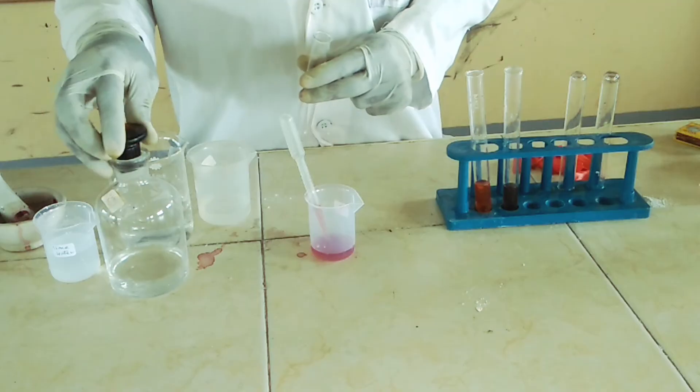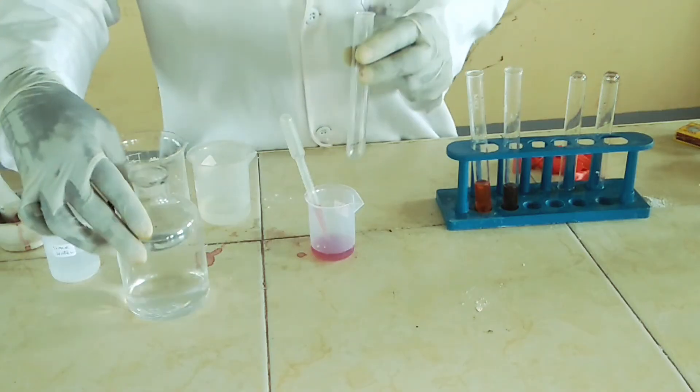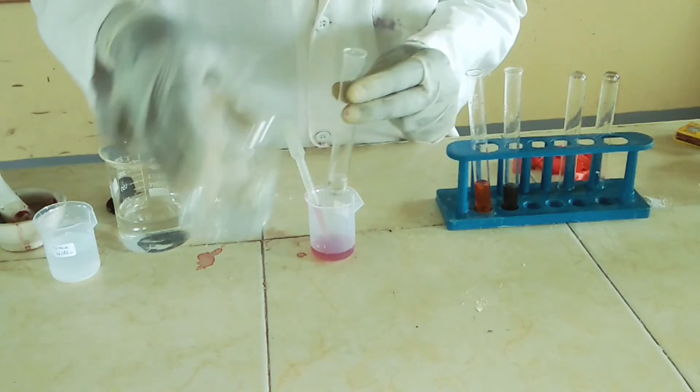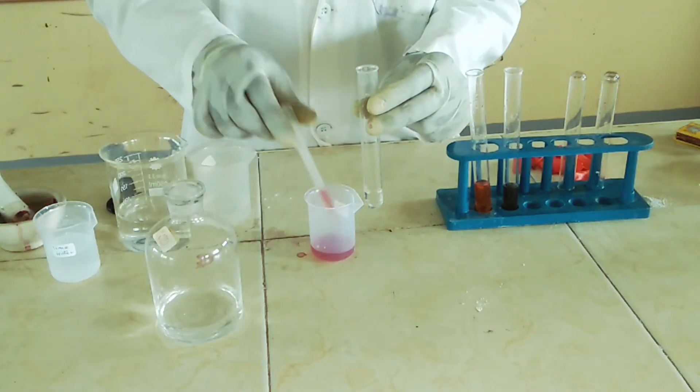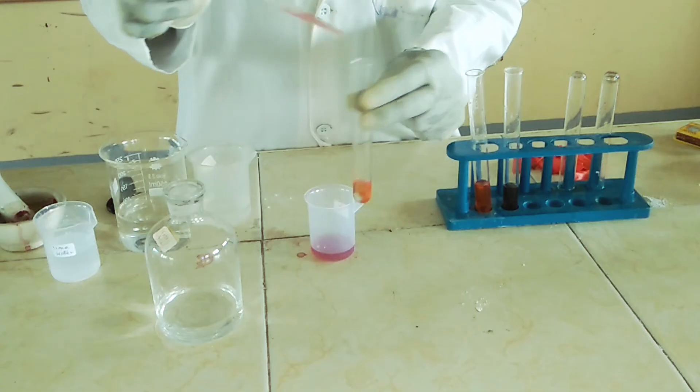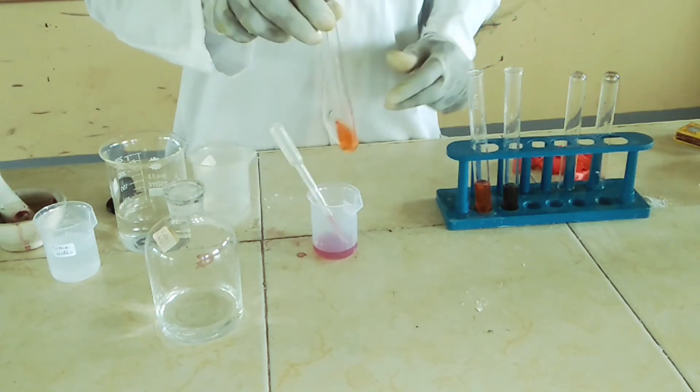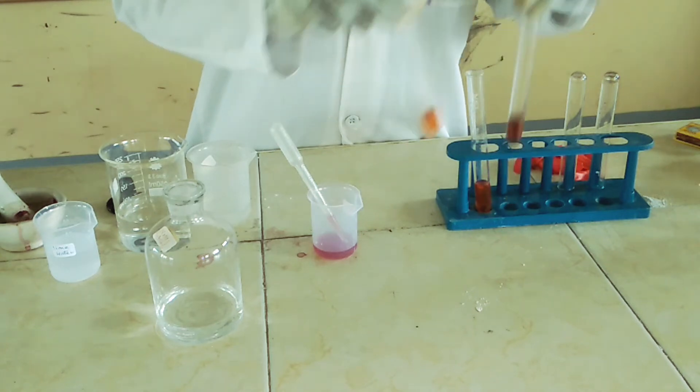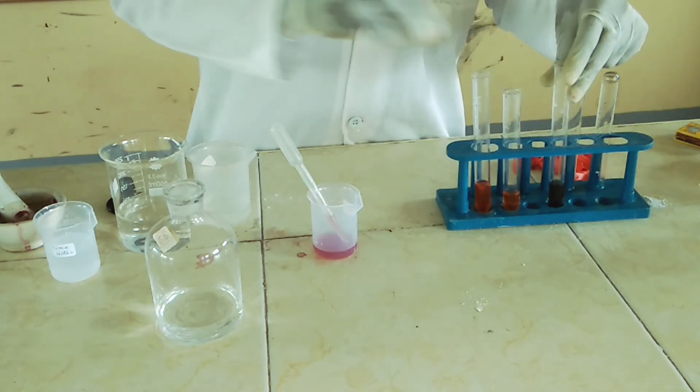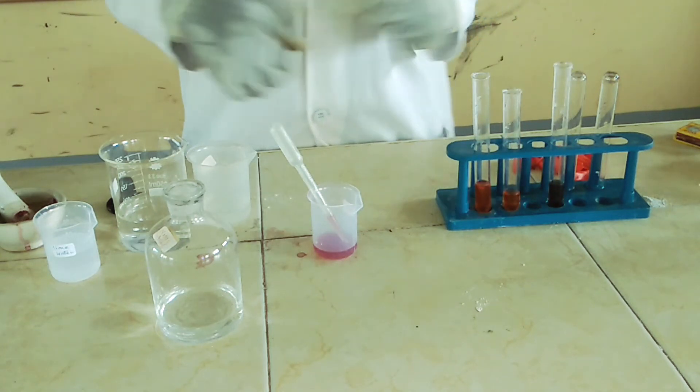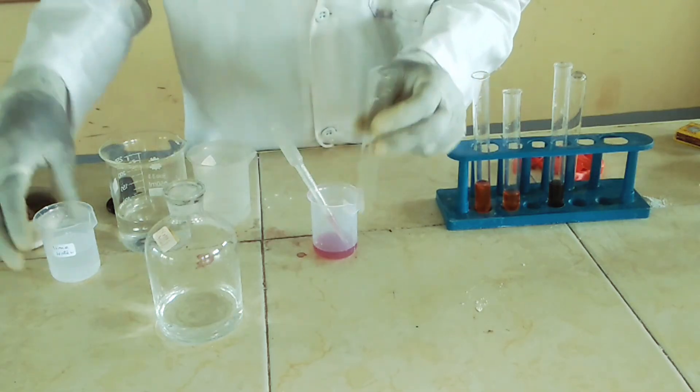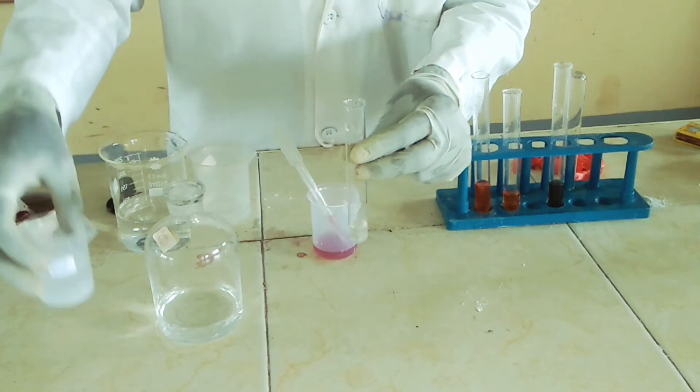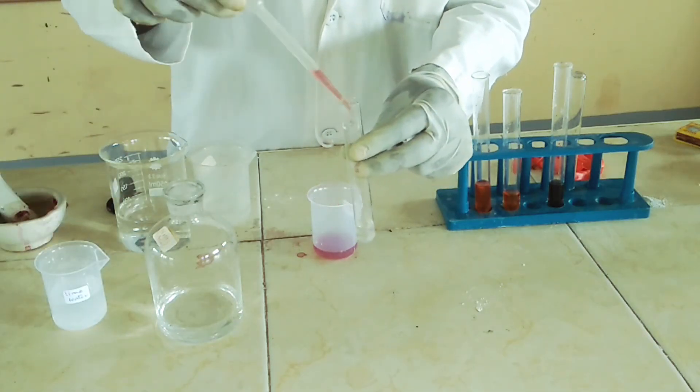I'm also going to test another acid using the same indicator. So I'm going to test nitric acid. Again, put some small amount of the nitric acid in a test tube, then add two to three drops and shake. Again, we are getting an orange color. You can see it's almost the color that we got using hydrochloric acid. So it's giving us a definite color in an acid.